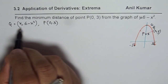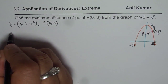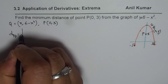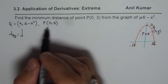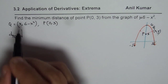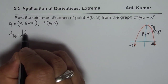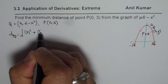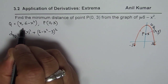The idea is to find the distance between P and Q. Using the distance formula, distance PQ equals the square root of (x minus 0) squared plus (6 minus x squared minus 3) squared, which simplifies to square root of x squared plus (6 minus x squared minus 3) squared.